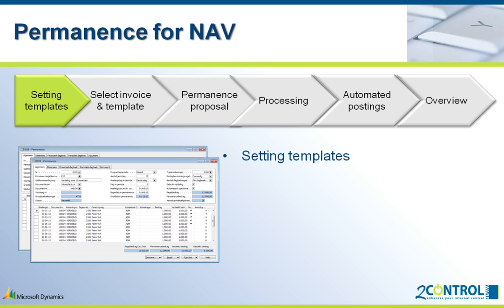Allocations you want to run more than once, such as the spread of an invoice for a whole year, you can capture in templates. Based on these templates a permanent proposal will be calculated. First we need to set up a template so we don't have to set the required distribution again for each invoice. Of course we can set up as many templates as needed.